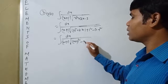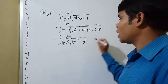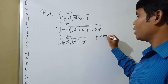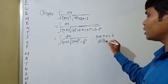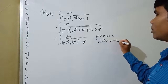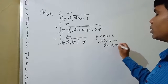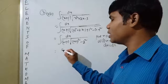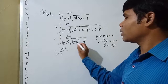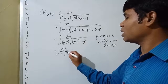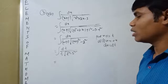Now put x+1 equal to t and differentiate with respect to x, so dx equals dt. That means we get dt divided by t times root over t² minus 2².